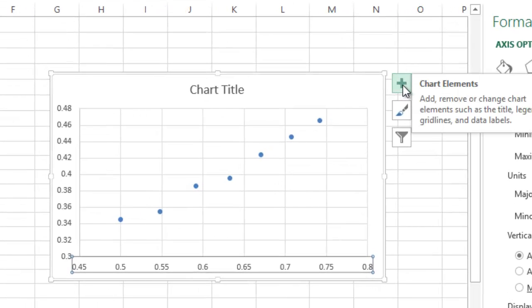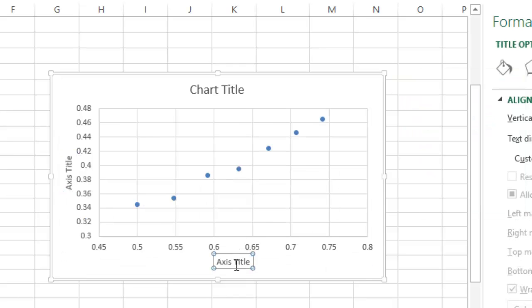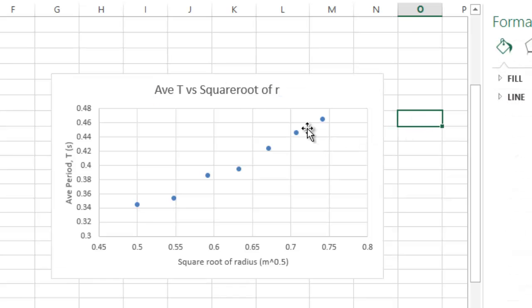We're aiming for merit, remember? Achieved. We're really close, but I might as well aim for merit. We'll turn on the axis titles. The bottom one, here it comes, is the square root of radius, which has meters to the power of 0.5 as the unit. And the vertical one is the average period, I think I spelled that right, capital T, unit of seconds. Chart title, you don't really need, but if you really want, you could say average T versus square root of R. So, that's our graph.